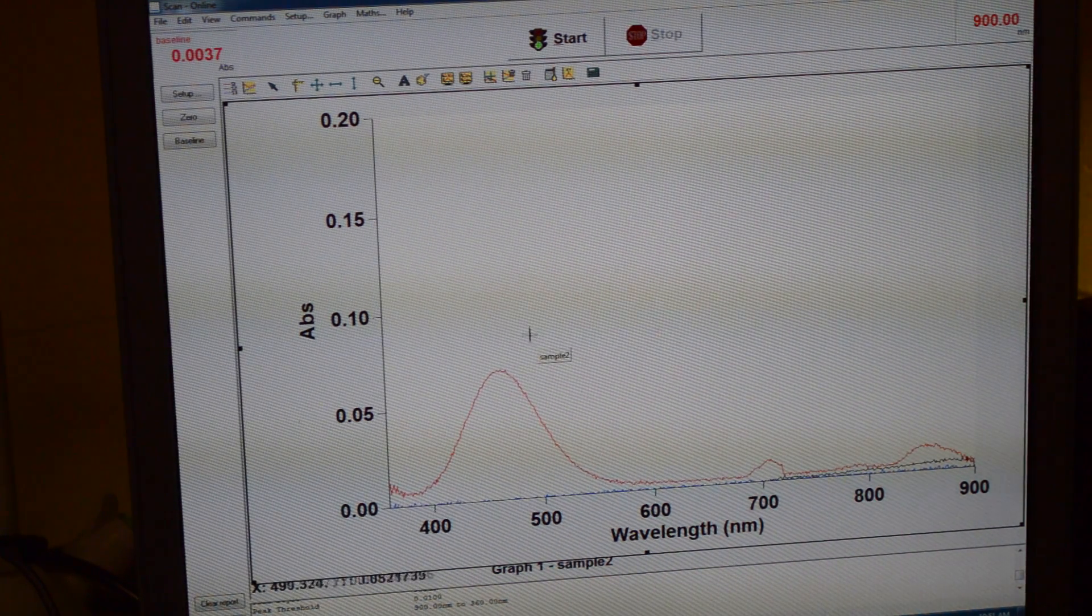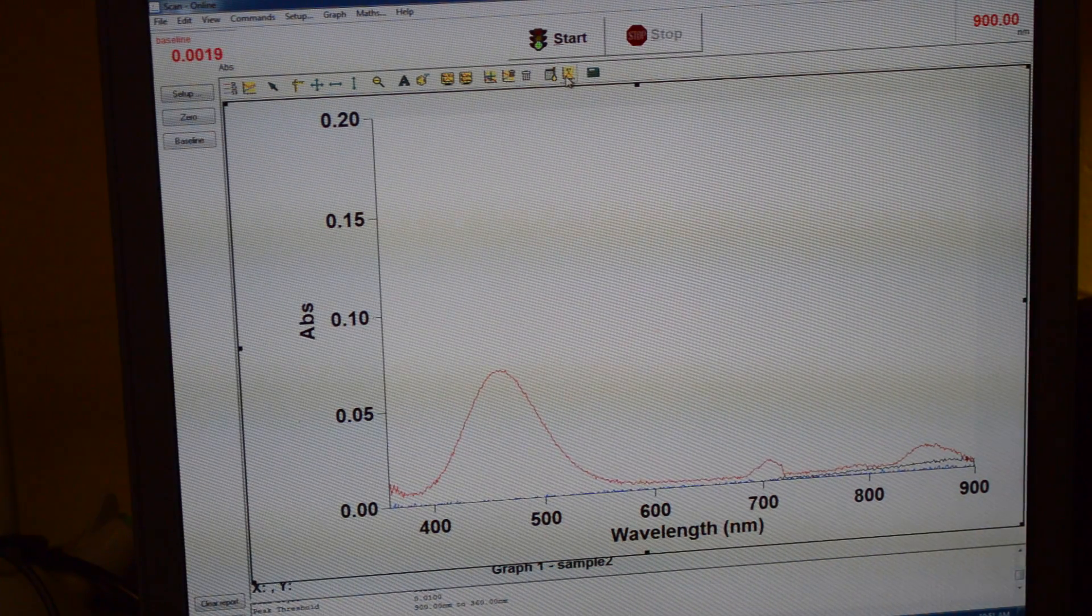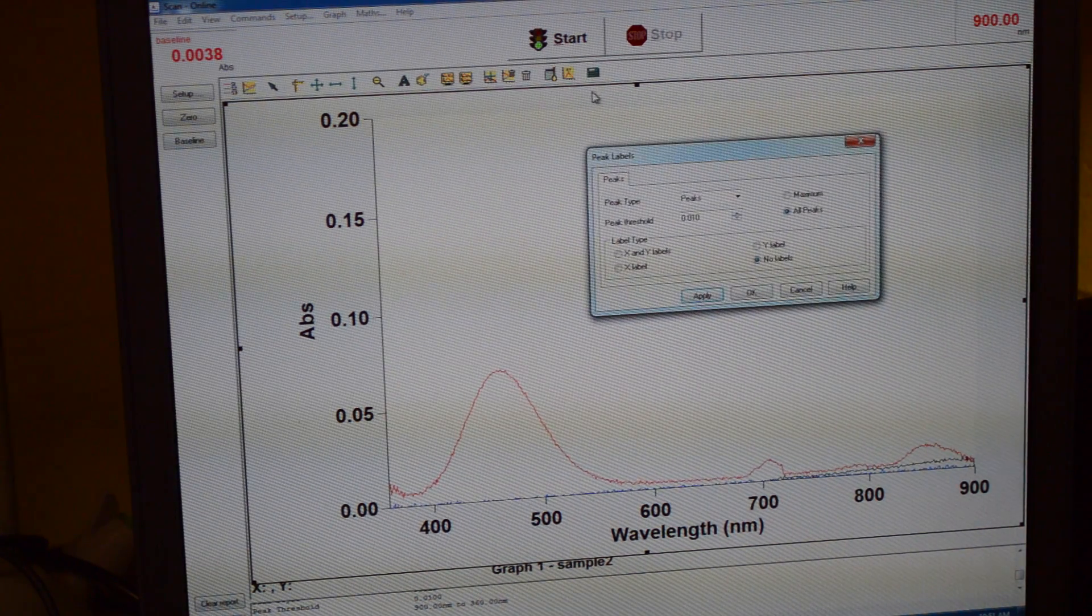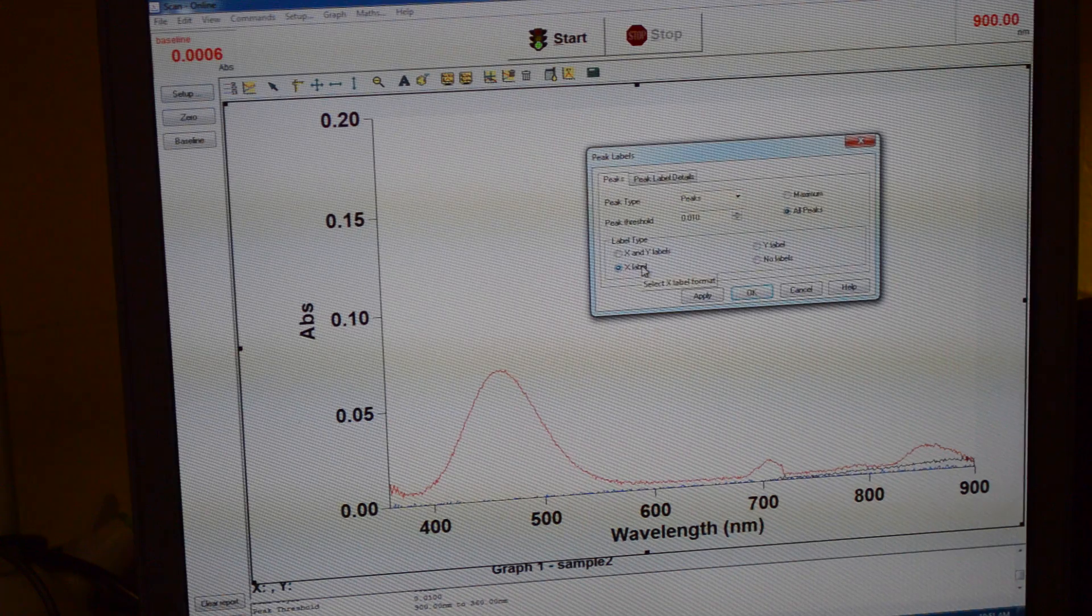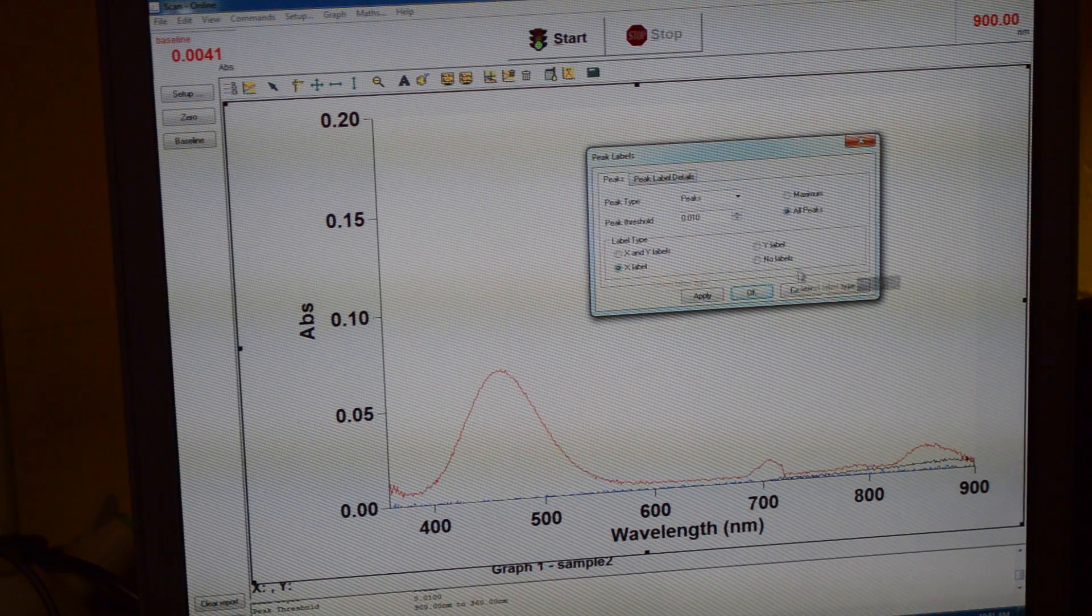Next, we want to find the xy coordinates of this peak here. To do that, you're just pressing xy and this icon is called peak labels. We just want x labels here, so we're going to click the x label and OK.